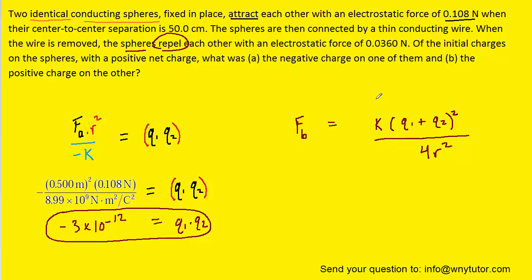So we'll move over to the fb equation. And in this case, we're going to solve for q1 plus q2. So we'll multiply both sides of the equation by 4r squared. And then we'll divide by k. And then we'll actually have to take the square root of both sides to finish that off.